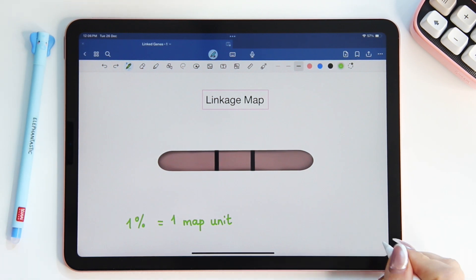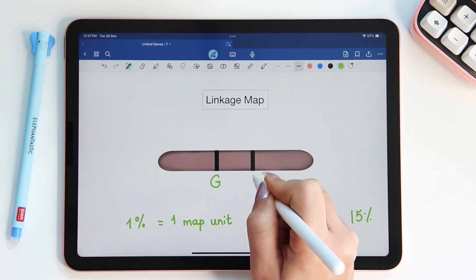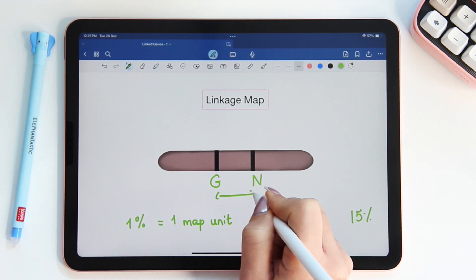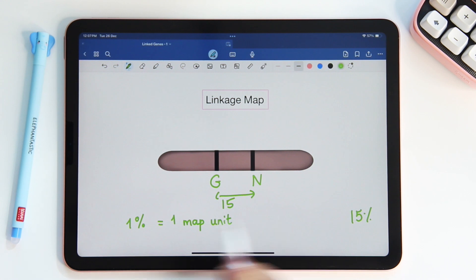For example, the recombination frequency in this question was 15%. That means the gene for body color and the wing shape are 15 map units apart.